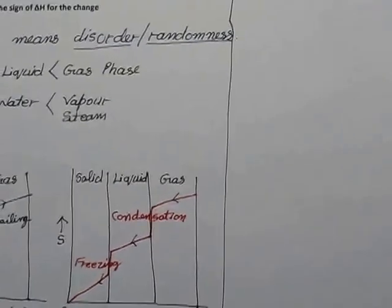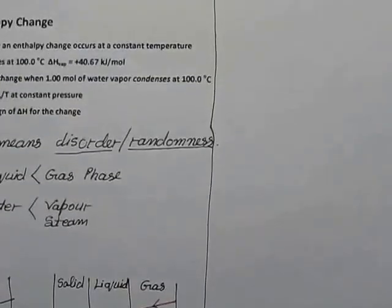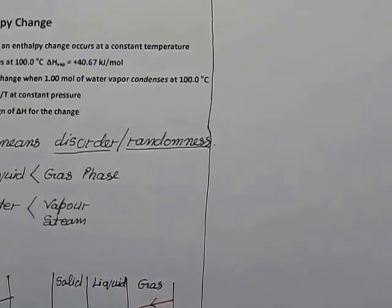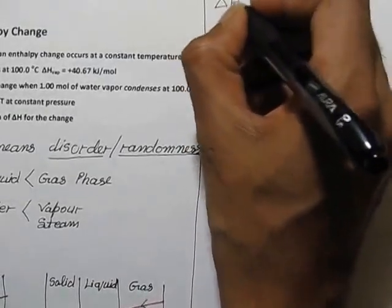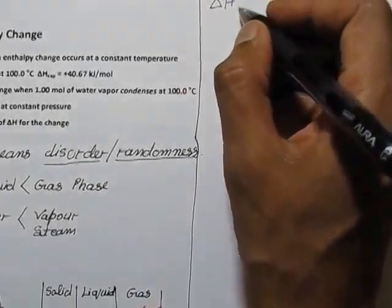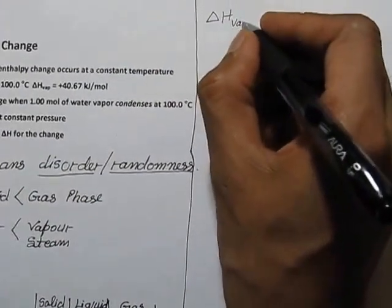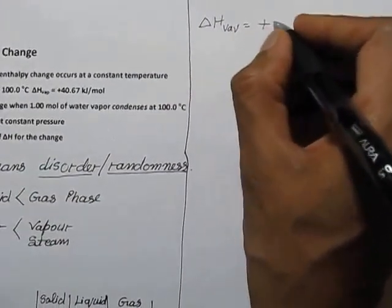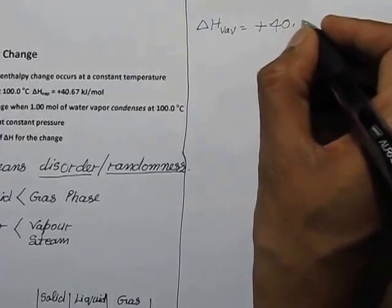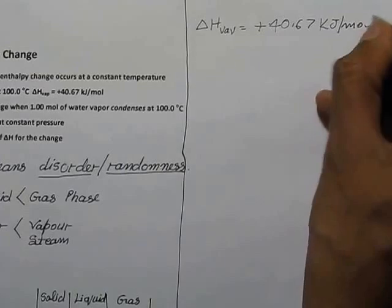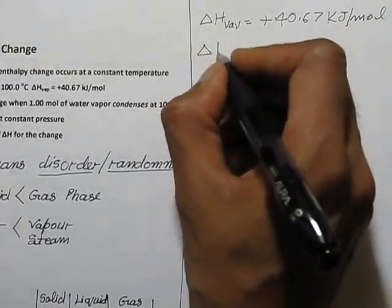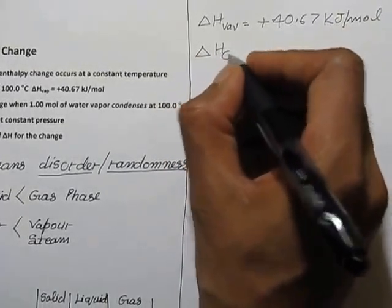Here is given ΔH for vapors is +40.67 kJ/mol. And ΔH for condensation will be exactly the same but sign will be negative.